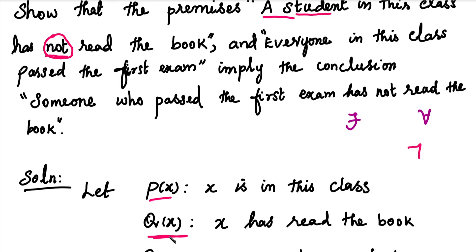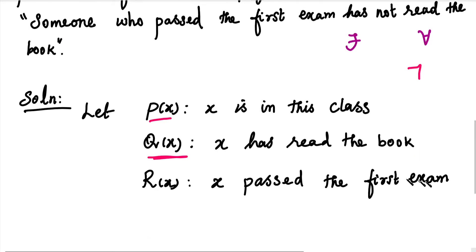The second premise states: everyone in this class passed the first exam. The sentence 'passed the first exam' is a different predicate. We give it the name R(x). So 'x passed the first exam' is R(x).